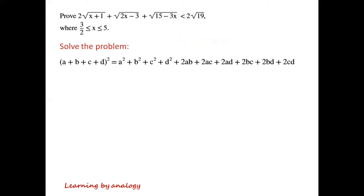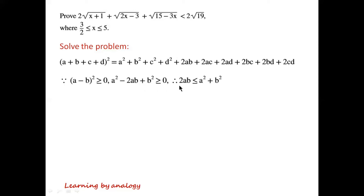(a+b+c+d)² = a²+b²+c²+d²+2ab+2ac+2ad+2bc+2bd+2cd. Because (a−b)² ≥ 0, we have a²−2ab+b² ≥ 0. Rearranging, 2ab ≤ a²+b².